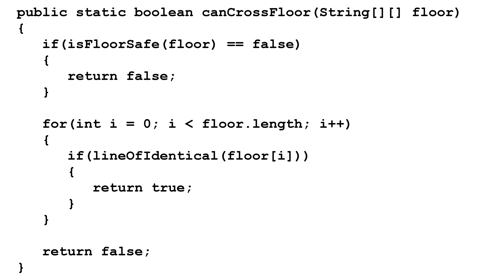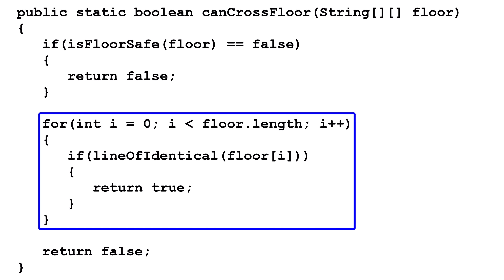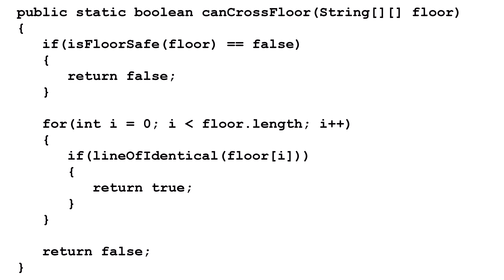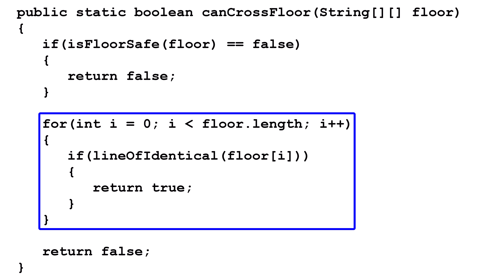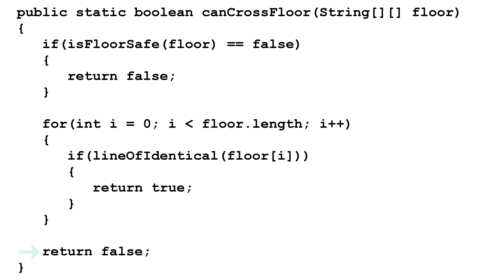Part C solution — CanCrossFloor. First, we call the IsFloorSafe method and pass it the pointer to the 2D array in the floor variable. If the method returns false, we know the floor is unsafe and we can immediately return false. If the method returns true, we continue on and check if there's a path of identical symbols that Nevada Smith can use to cross the bridge. We know a 2D array is actually a 1D array with each compartment containing another 1D array. This for loop traverses the outer 1D array. Each time we go through the loop, we pull out one of the inner 1D arrays and pass it to LineOfIdentical. If the method returns true, we have found a path and can immediately return true. If we finish the for loop and never found a row of identical symbols, there is not a safe path and we return false.